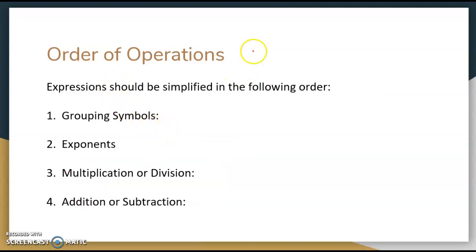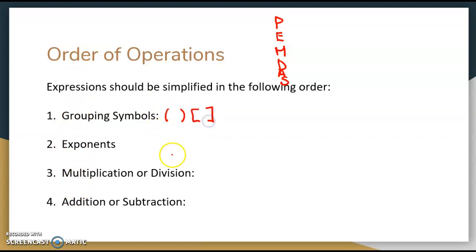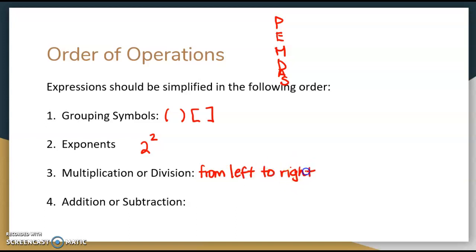So what is the order? Some of you guys might have heard the term PEMDAS before, and that still applies: parentheses, exponents, multiplication, division, addition, subtraction. We could also group it into 4 steps: first, grouping symbols — those are your parentheses, or you might see brackets — you always do those first. Then exponents, anything raised to a power. Then multiplication or division from left to right. And lastly, addition or subtraction also from left to right.